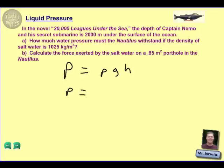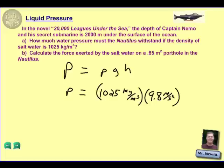the density of the water is given to us at 1,025 kilograms per meter cubed, force of gravity 9.8 meters per second squared, and the distance under the water is 2,000 meters.